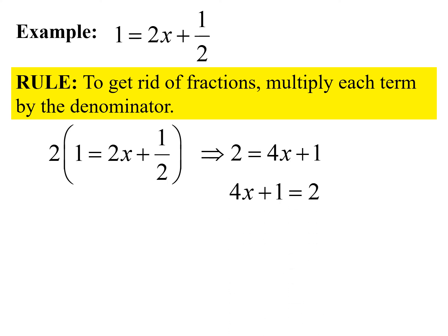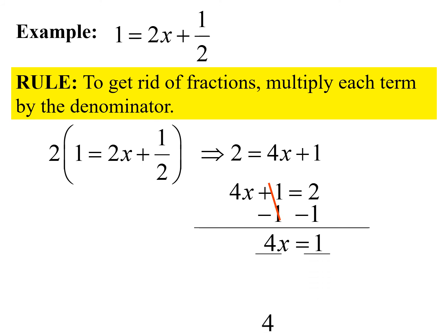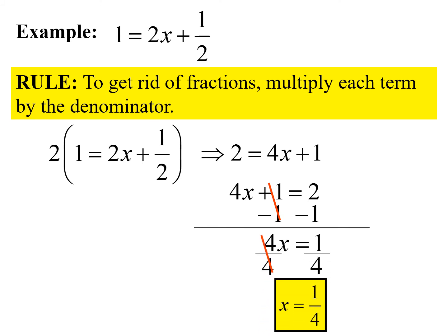I switch the sides so we have 4x plus 1 on the left and 2 on the right. I subtract 1 from both sides, which gives 4x equals 1, then divide both sides by 4, so x equals one-fourth. Leave it in fraction form — don't be afraid of fractions.